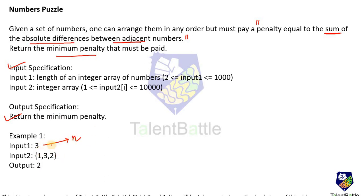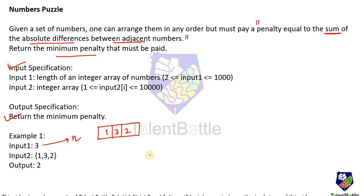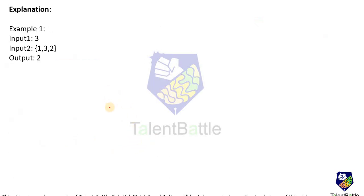Let us analyze the provided test case. The value of n is three, meaning there will be three elements in the array: 1, 3, and 2. We have to check the sum of absolute differences between adjacent numbers — not just for this arrangement, but for all possible arrangements, since we can rearrange them in any order as mentioned in the problem statement. Our approach: check the sum of absolute differences for all possible arrangements, then return the minimum value.